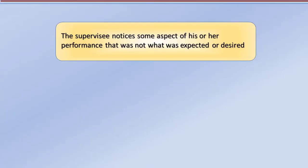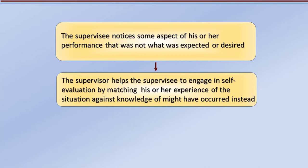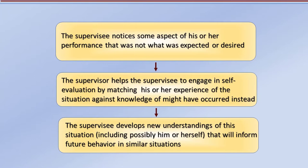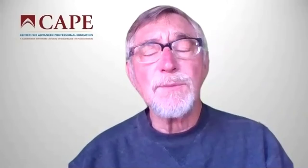Critical reflection involves the supervisee noticing something about their performance that puzzles or confuses them, or simply that they'd like to think of ways they might have done it differently or better. The second phase is the supervision part, where the supervisor works with them to explore the context, their experience, and how they might have done it differently. Finally, there's the resolution part where it comes together. The supervisor's task is to help the supervisee explore the experience — not unlike what therapists do when helping clients develop new understandings and insights.